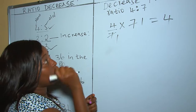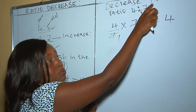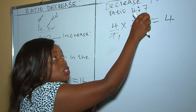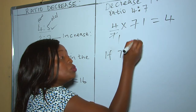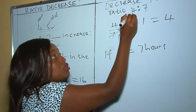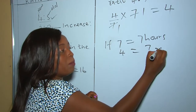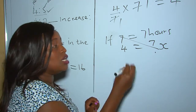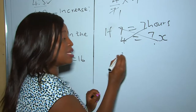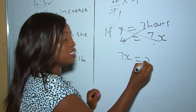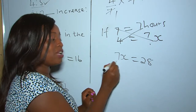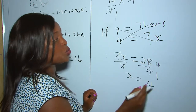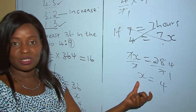The second formula uses cross multiplication. This original number in the ratio is 7, so you say: if 7 in the ratio equals 7 hours, what does 4 in the ratio equal? Cross multiply — 7 times x equals 4 times 7, which is 28. Divide both sides by 7, and x equals 4. So you can either use fractions or cross multiplication — both give the same answer.